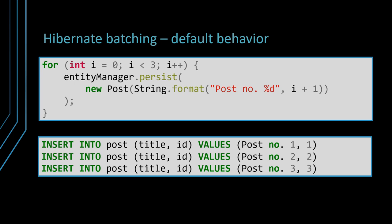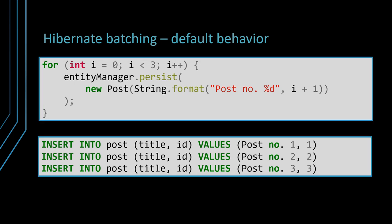Unfortunately, performance tuning is often done only after the application is deployed into production, and switching to batching JDBC statements might require significant data access code changes. By default, Hibernate doesn't use JDBC batch updates, so when inserting three post entities, Hibernate generates three insert statements. Therefore, we need to explicitly configure Hibernate to use JDBC batch updates.